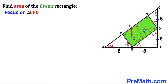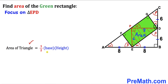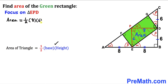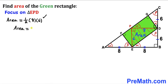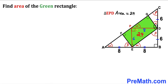Here's our next step. Let's focus on right triangle EPD, whose side lengths are 6 and 8. We are going to calculate the area of this right triangle EPD. Recall the area of a triangle formula: area equals half times base times height. In our case, our base is 8 and our height is 6. So the area of triangle EPD is going to be one half times 8 times 6, which simplifies to 24 square units.